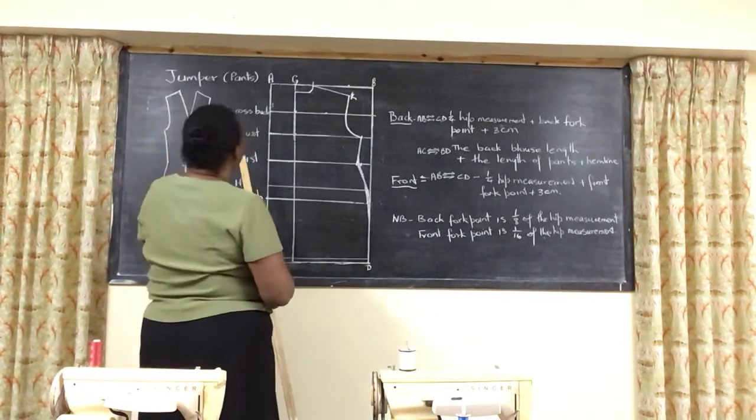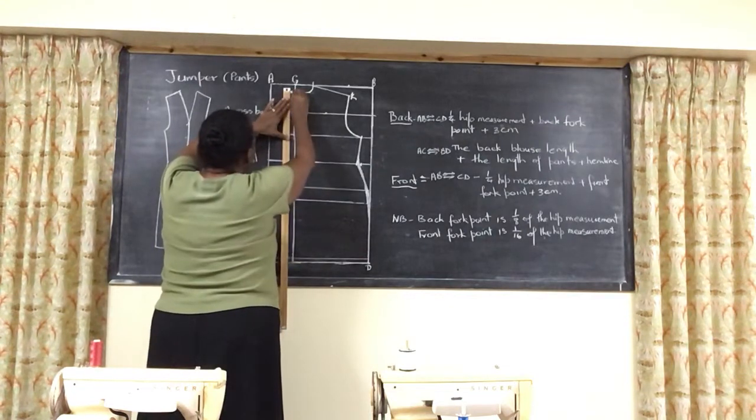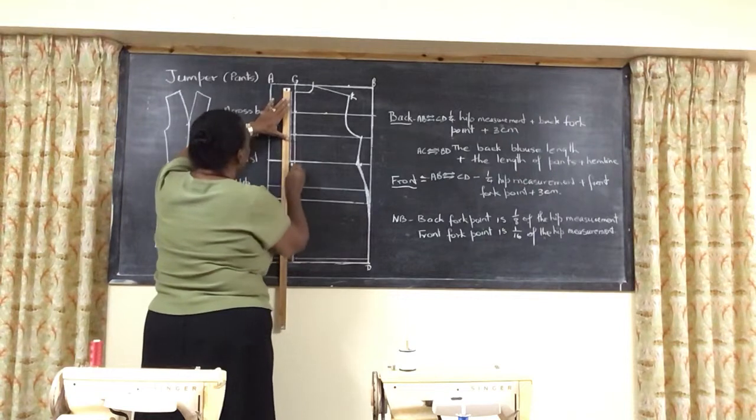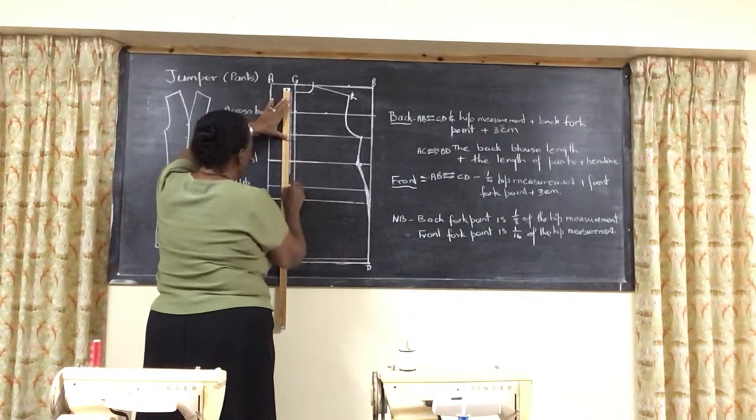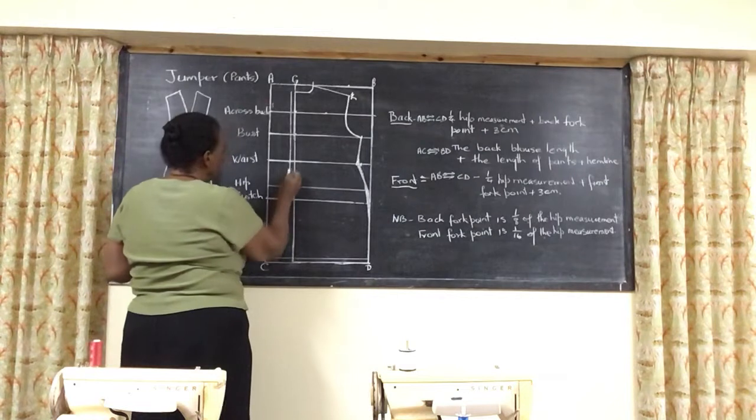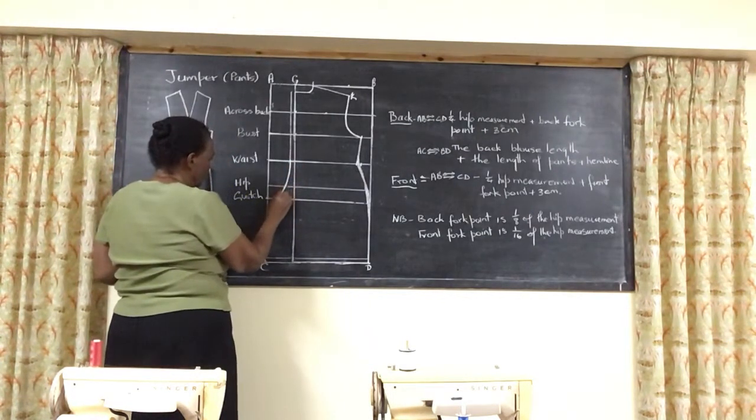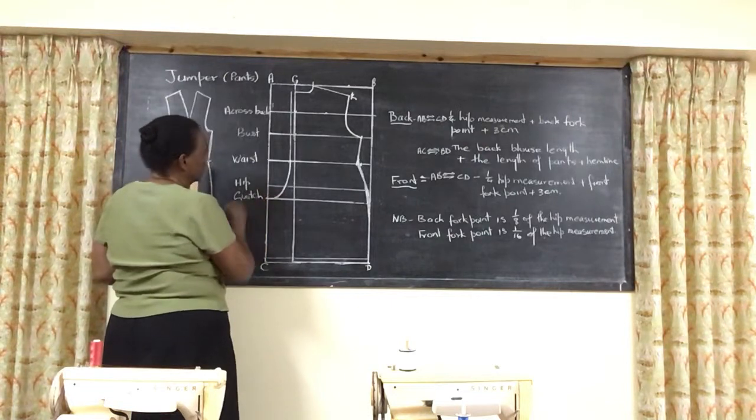And then you are going to come here, one and a half from G to the waist. Come below the waist about half way. On approaching the hip line, we are going to go out. And then we come out to the fork point area.